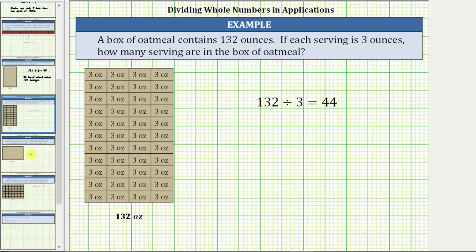To model the quotient, if the box contains 132 ounces and we divide the oatmeal into three ounce servings, we have a total of 44 three ounce servings in one box.